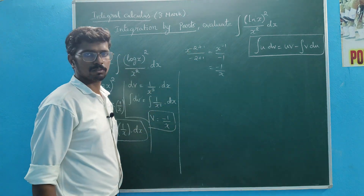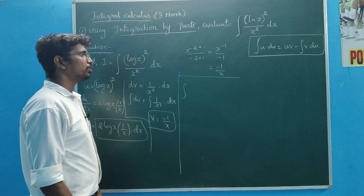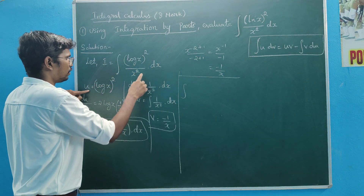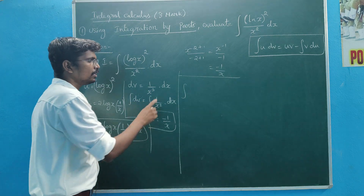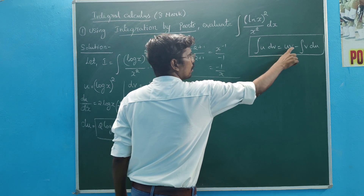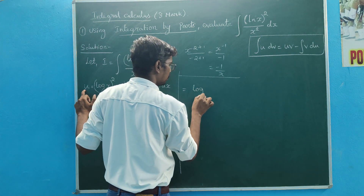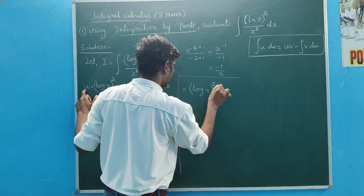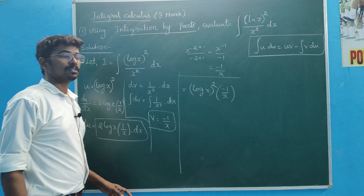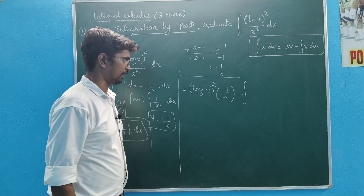Now we will apply the formula: integral of u dv. First, u dv — this is u. u is equal to dv. 1 by x square dx is equal to x. Therefore, u is equal to v. So u is equal to x power minus 1, which is minus 1 by x.